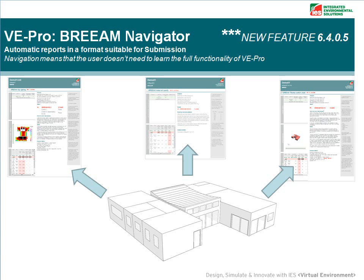IES are committed to updating and enhancing this tool over the coming months. Even though 42 credits are currently possible, there will be up to five more credits coming in the near future in the Health and Wellbeing section and the Materials section. There is currently a special introductory offer of 25% off the list price — for details, please contact us at sales@iesve.com.